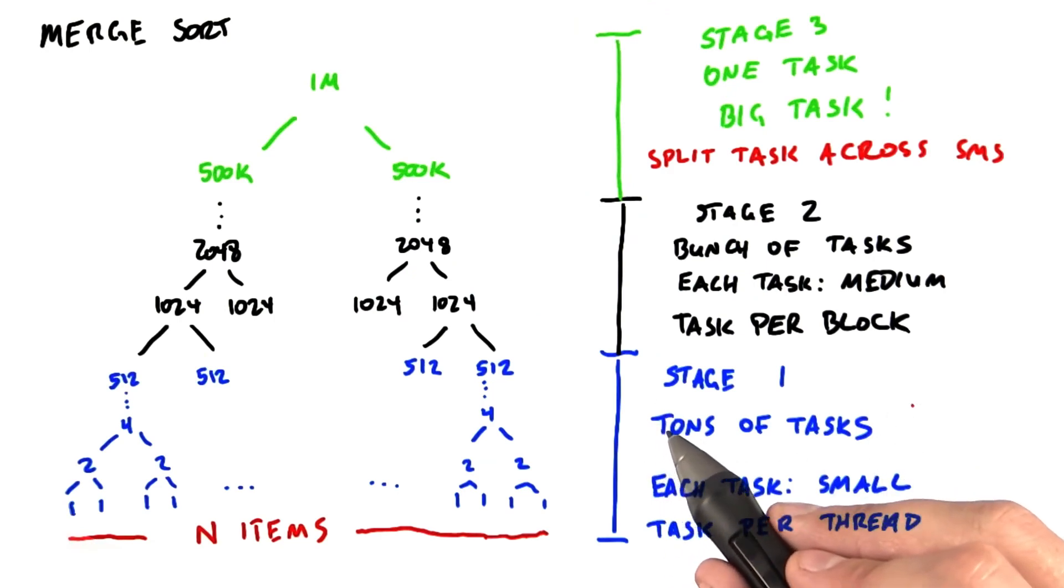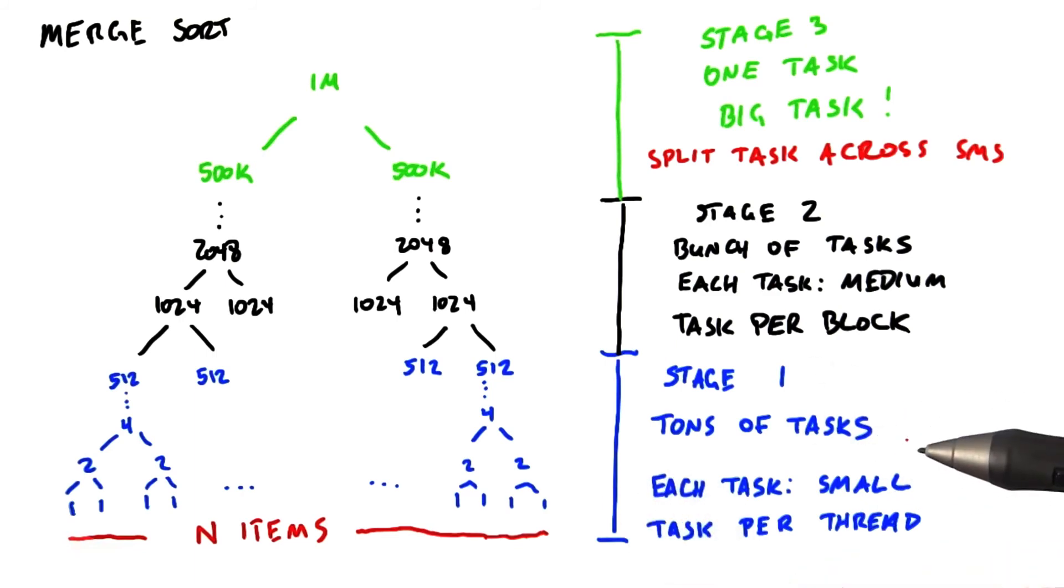So to sum up what we just did, we looked at three different phases of a merge sort, each of which we attacked with a different strategy. First, we used one thread block to solve many merging problems in parallel. Here, the number of problems was much, much greater than the number of SMs.